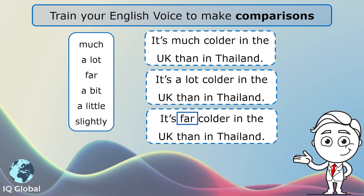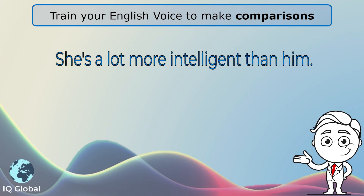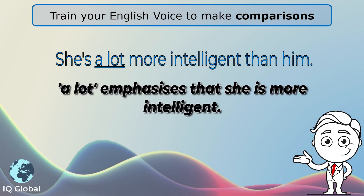Let's have a look at another example. She's a lot more intelligent than him. So here I am using the words 'a lot' to emphasize that she is a lot more intelligent than him. It shows a lot more emphasis in sentences when you use these words.